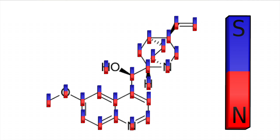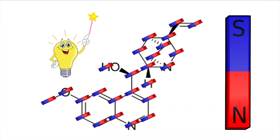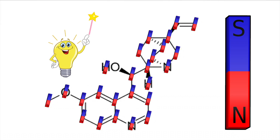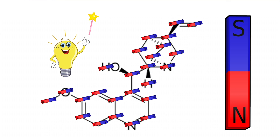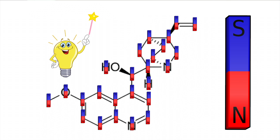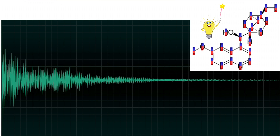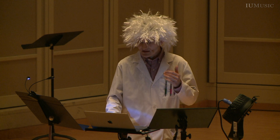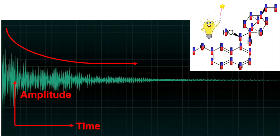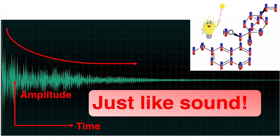But we can disrupt this alignment by adding energy in the form of light. This causes the atoms to rotate around rapidly, but they gradually return to being back in alignment with the magnetic field. Let's see that animation again, but this time plotting the amplitude of those oscillations over time. And we get a graph that looks something like this. We can see the decreasing amplitude of these magnetic oscillations over time. The key takeaway from this graph is that it's an amplitude versus time graph, and this is really important because that's exactly what sound is. Sound is and can be represented by an amplitude versus time waveform.